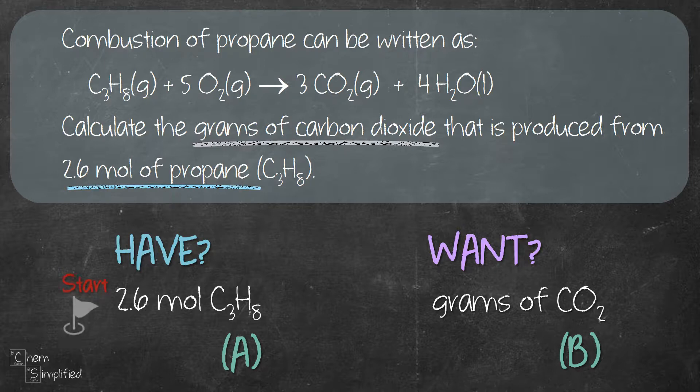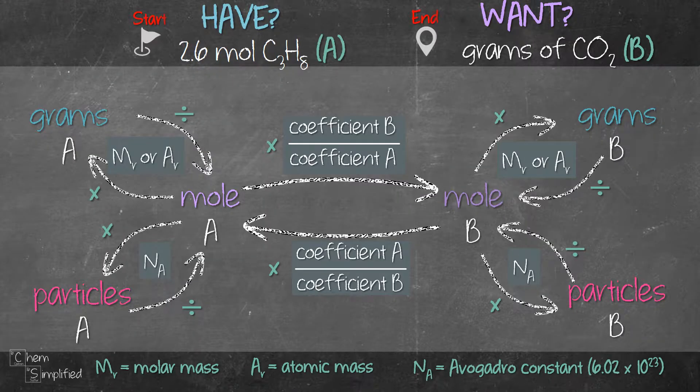So our starting point is what we have and our ending point is what the question wants. So the next thing we're going to do is tag our start and end point on our stoichiometry plan.